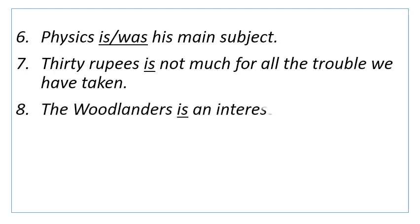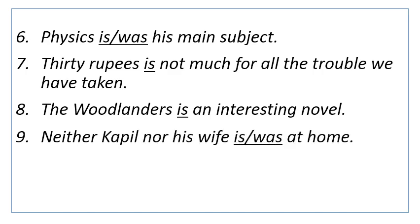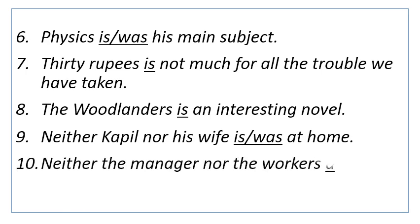Number 8: The Woodlanders—an interesting novel. Answer is, is. Reason is, when the plural noun is a proper name for some singular or single object or some collective unit, it must be followed by a singular verb. Number 9: Neither Kapil nor his wife—at home. Answer is, is or was. Reason is, two or more singular nouns connected by or, no, either/or, neither/nor requires a singular verb. Number 10: Neither the manager nor the workers—present. Answer is, are or were. Reason is, when one of the subjects joined by or or nor is plural, the verb must be plural, and the plural subject should be placed nearest to the verb.